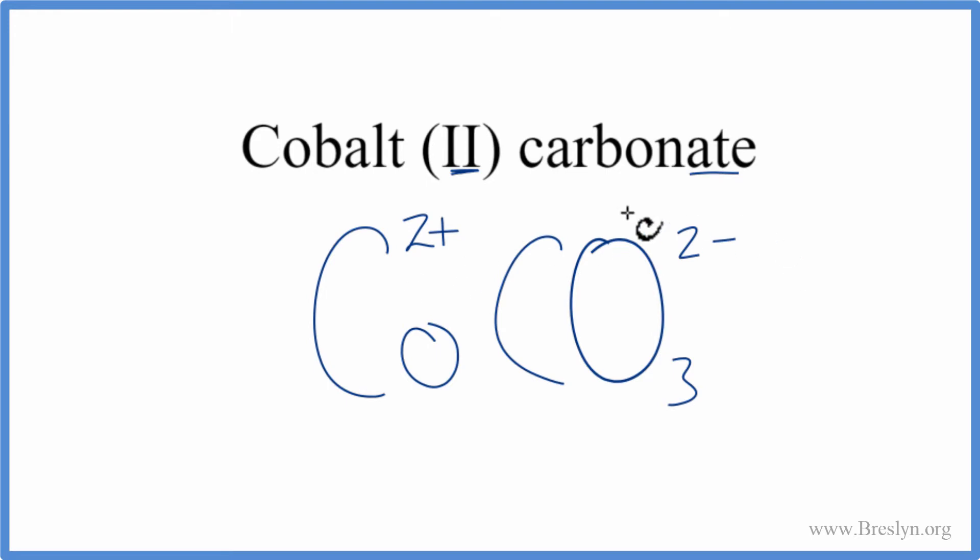So these charges, they need to add up to zero for this to be a neutral compound, and cobalt (II) carbonate, that's a neutral compound. 2+, 2-, that adds up to zero, so this is the formula for cobalt (II) carbonate.